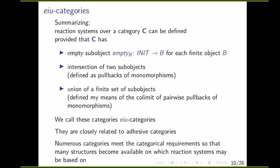Reaction systems over category C can be defined provided the category has initial objects for each finite object B, intersections for two sub-objects, and unions of a finite set of sub-objects. We call these EU categories, which are closely related to adhesive categories. We have shown that numerous categories meet these requirements, including graphs and algebraic structures like monoids and partial ordered sets.